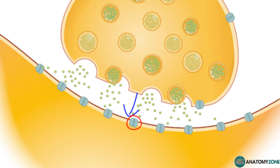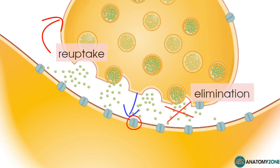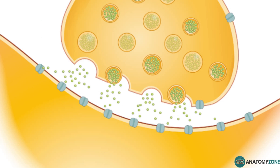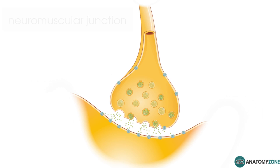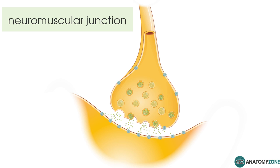The final step of this process is neurotransmitter elimination or reuptake into the presynaptic terminal. To illustrate this whole process with a specific example, we can look at the neuromuscular junction — where the nervous system is in contact with the muscles. In this example, the presynaptic neuron would be a motor neuron, and the postsynaptic cell isn't actually a neuron — it would be the muscle cell.